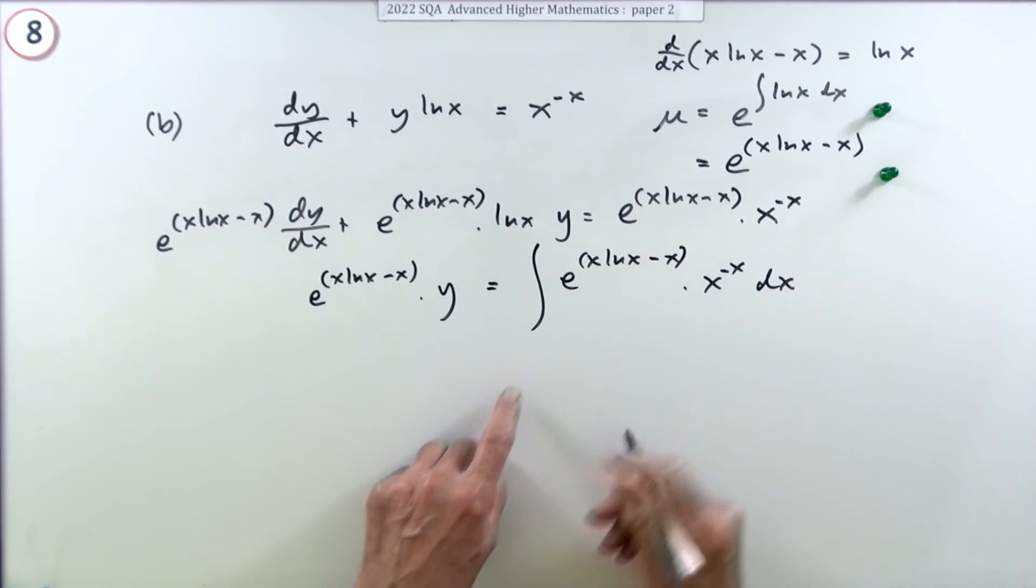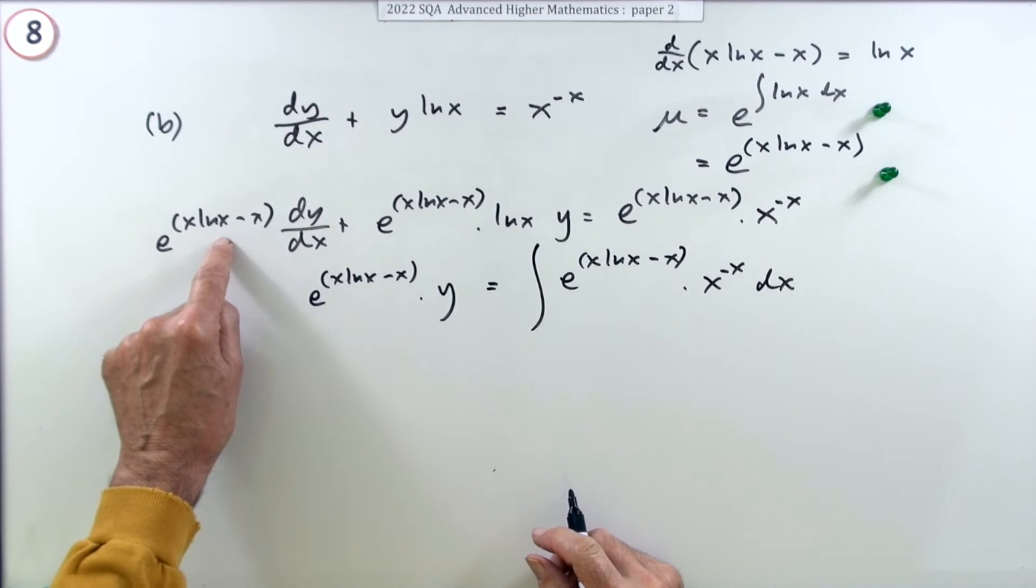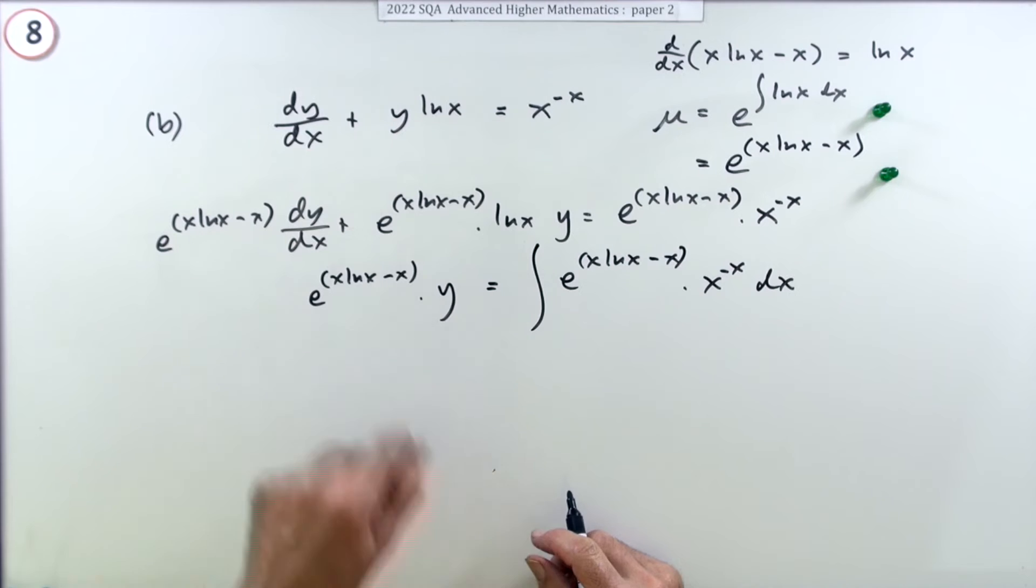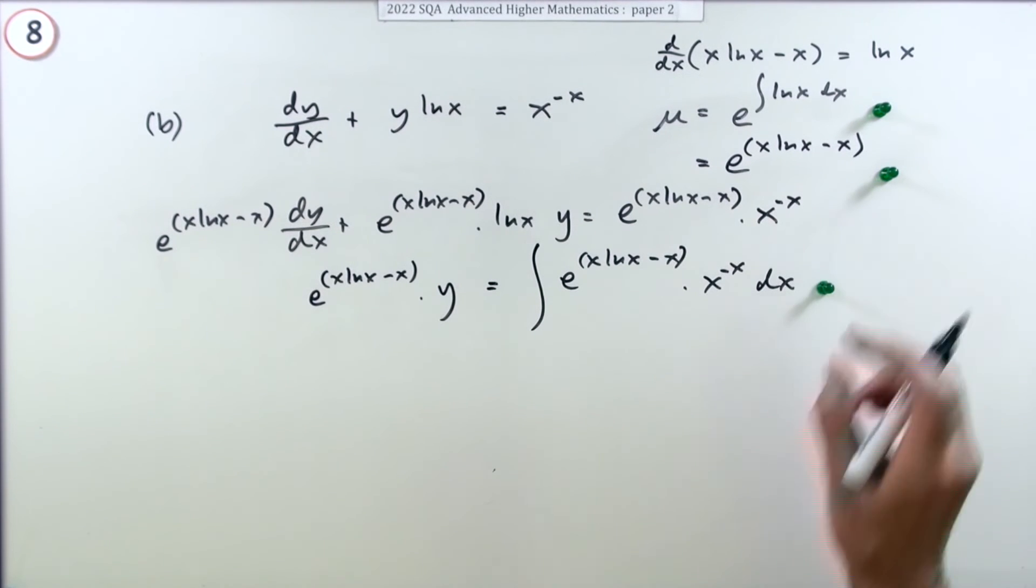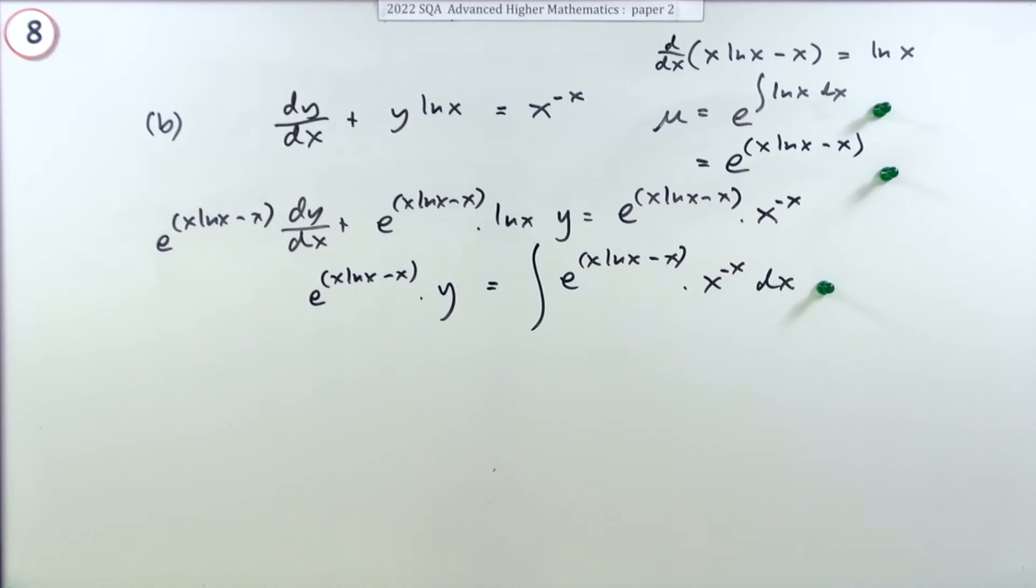Because that was just the product rule, so you knew what the integral of that was. Now doing that gets the next mark. Now you've just got to figure out where this bunch comes to.